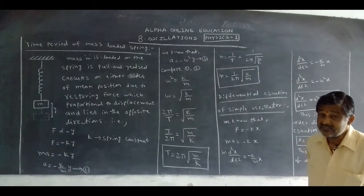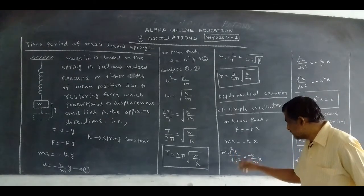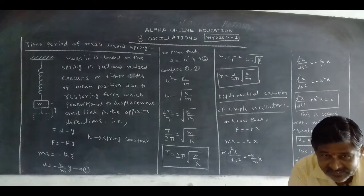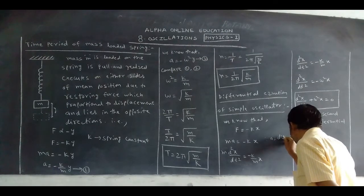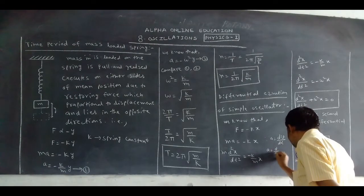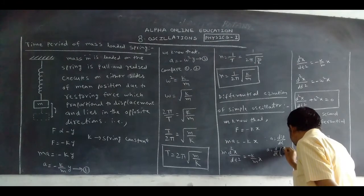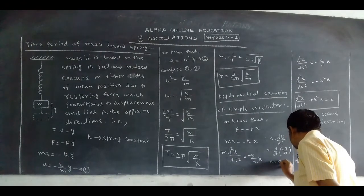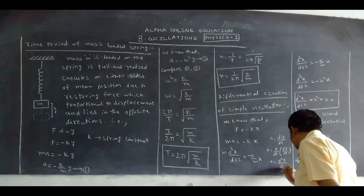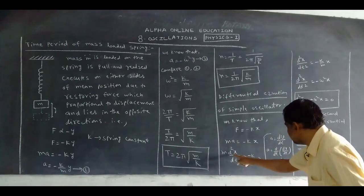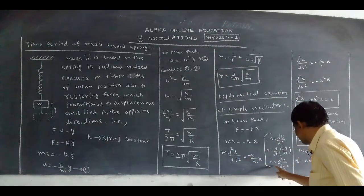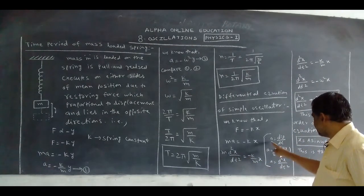Acceleration A = dV/dt, or equivalently d²x/dt². How do we get this? A = dV/dt = d/dt(dx/dt) = d²x/dt². Acceleration is the rate of change of velocity, and velocity is the rate of change of displacement. So we can write A = d²x/dt².